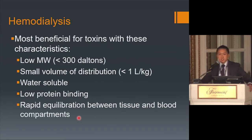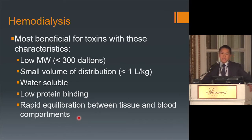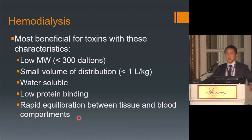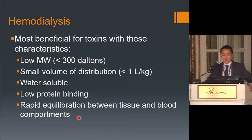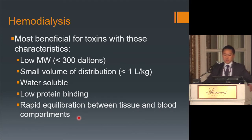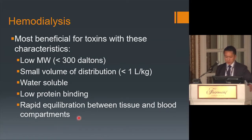Moving to extracorporeal methods: hemodialysis is usually not indicated for most poisons, but there are certain toxins for which it's clinically useful. Characteristics of toxins well-removed by hemodialysis include low molecular weight (less than 300 daltons), small volume of distribution, water solubility, low protein binding, and rapid equilibration between tissue and blood compartments.